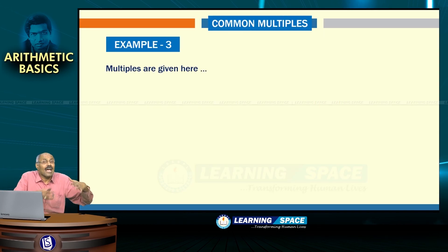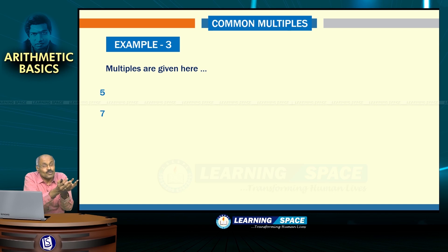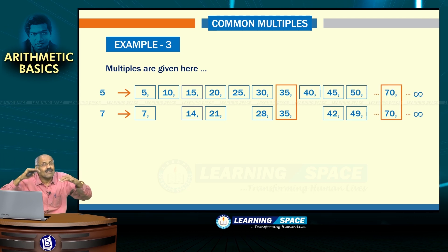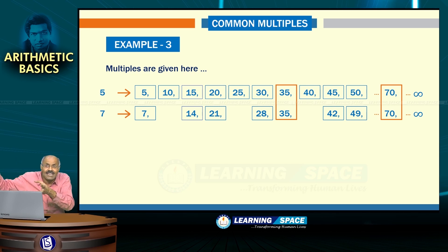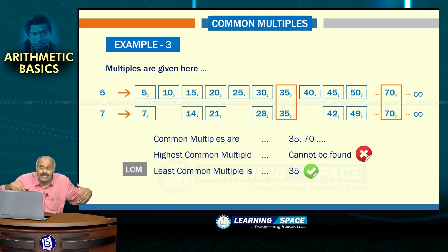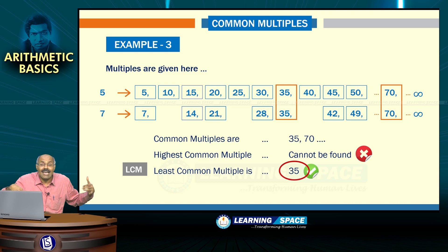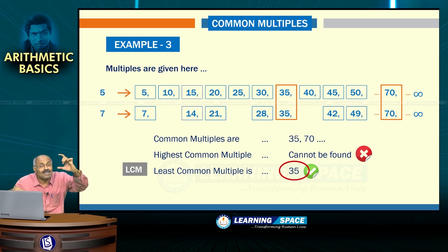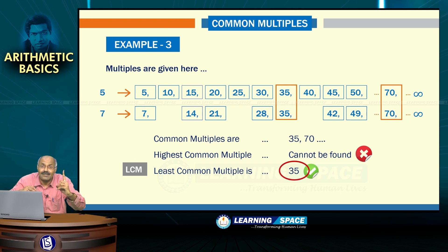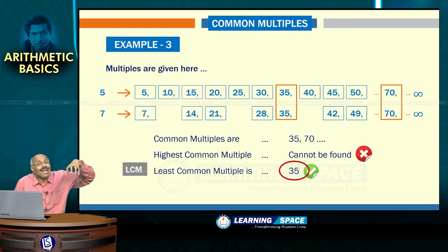Let us take two prime numbers: 5 and 7. The multiples of 5 are 5, 10, 15, 20, and so on. For 7: 7, 14, 21, 28, 35, and so on. The common multiples are 35, 70, and so on. The LCM is 35. An interesting aspect is that the LCM of two prime numbers is simply their product — just multiply them. And if someone asks for the HCF of two prime numbers, the answer is always 1.